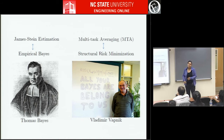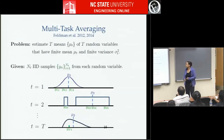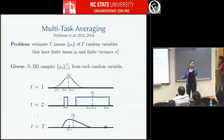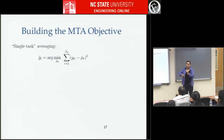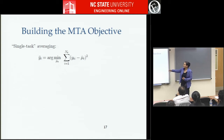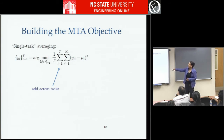To do structural risk minimization, we set the problem up as an objective we then want to optimize. We're dealing with estimating t-means from t random variables, but relaxing our assumptions — we don't need to assume anything is Gaussian. The true mean and true variance just need to be finite, and you can have as many samples as you want from the different distributions. The first step is to write the single-task means as minimizing squared error, which we sum over all T tasks. We also divide by the variance of each task — comparing apples to apples, minimizing the Mahalanobis distance. This still gives you the same single-task averages.